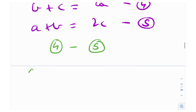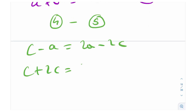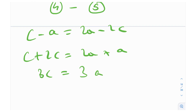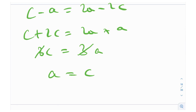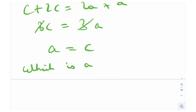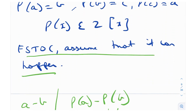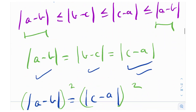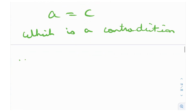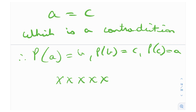Subtracting Equation 5 from Equation 4: (b + c) − (a + b) = 2a − 2c, so c − a = 2a − 2c, giving 3c = 3a, and therefore a = c. But this is a contradiction! We were told a, b, and c are distinct — they can never be equal. So no matter what case we consider, we always arrive at a contradiction, telling us that a must equal c, which violates our assumption of distinct integers.